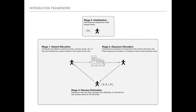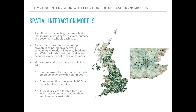I'll now briefly describe the spatial interaction models. This is a method for estimating the probabilities that individuals in our synthetic population visit supermarkets, primary and secondary schools each day. This is based on a cost matrix used to compute trip probabilities based on a network containing all roads in England, Scotland, and Wales, using the shortest path between each pair of zones. This gives us a probability that people spend their time in a particular supermarket or school.